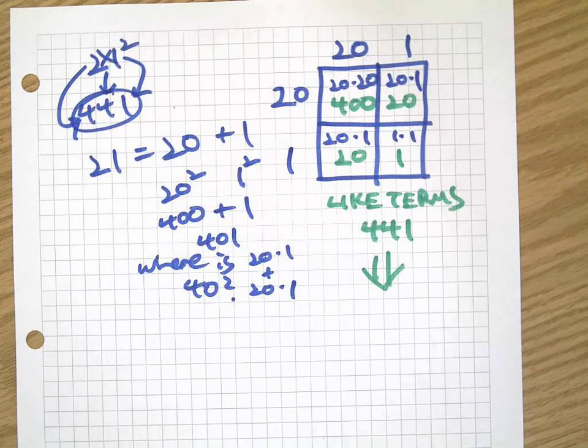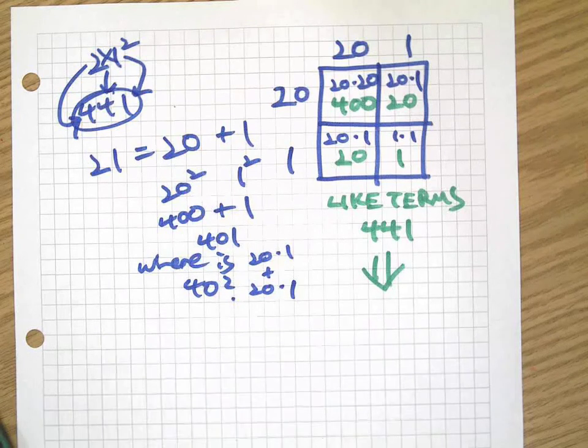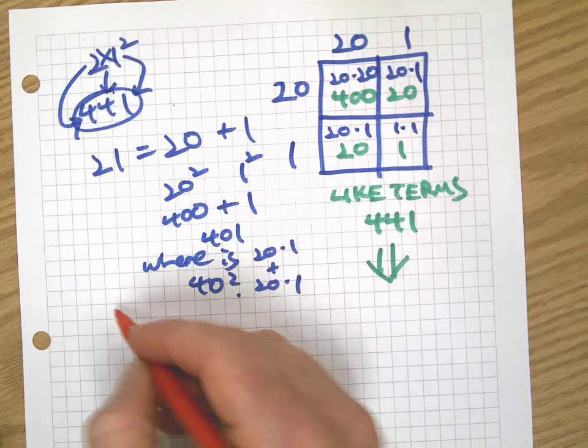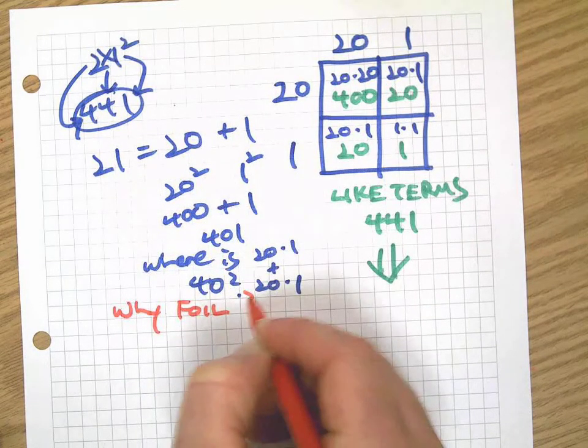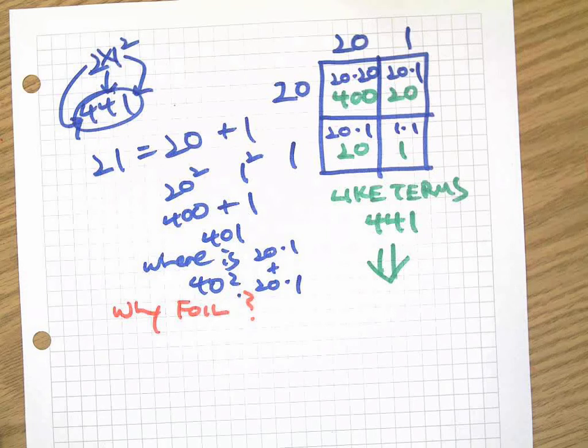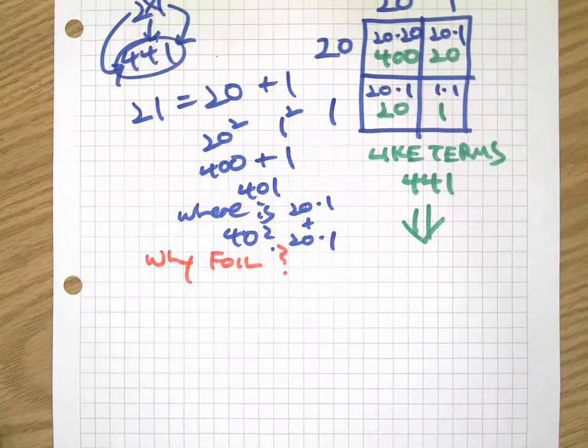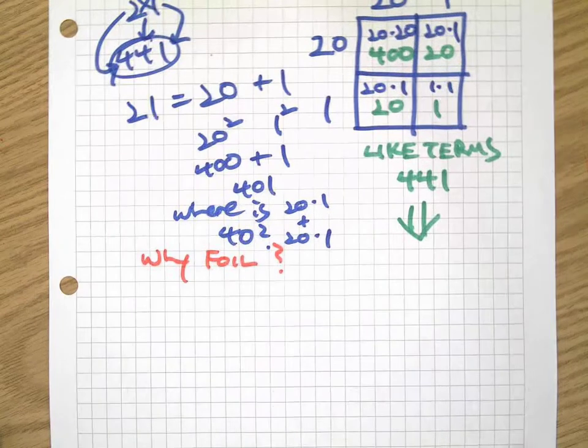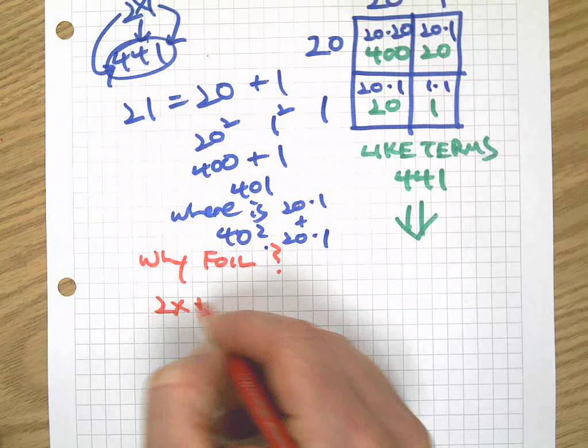So hopefully you can see how that works with a number, right? Now let's take that back to a binomial. Having this understanding of it as a number, I think, is very important to understanding why they teach the FOIL method and why I choose not to. It's a good connection for us, but I personally think it leads to some confusion sometimes.